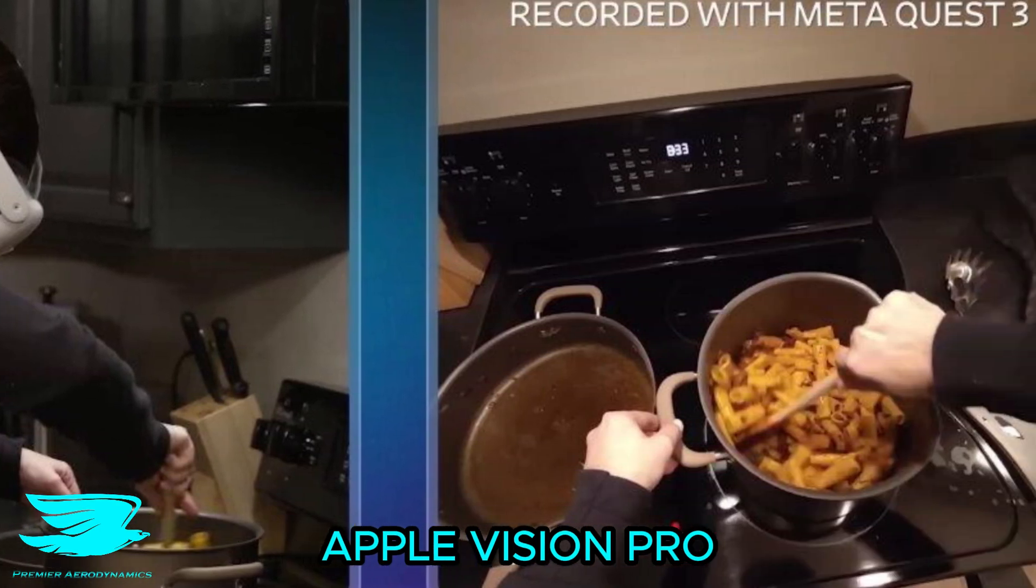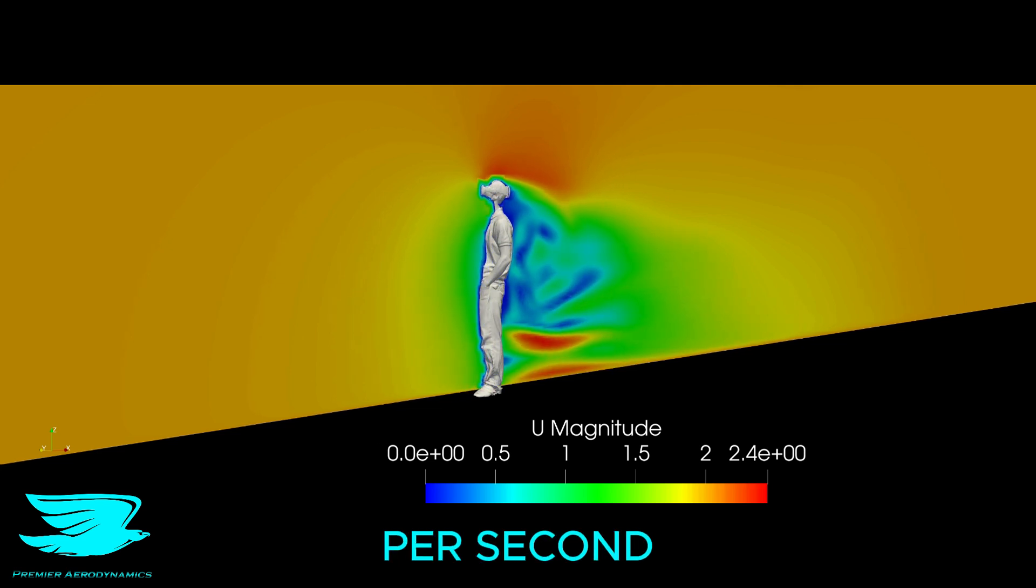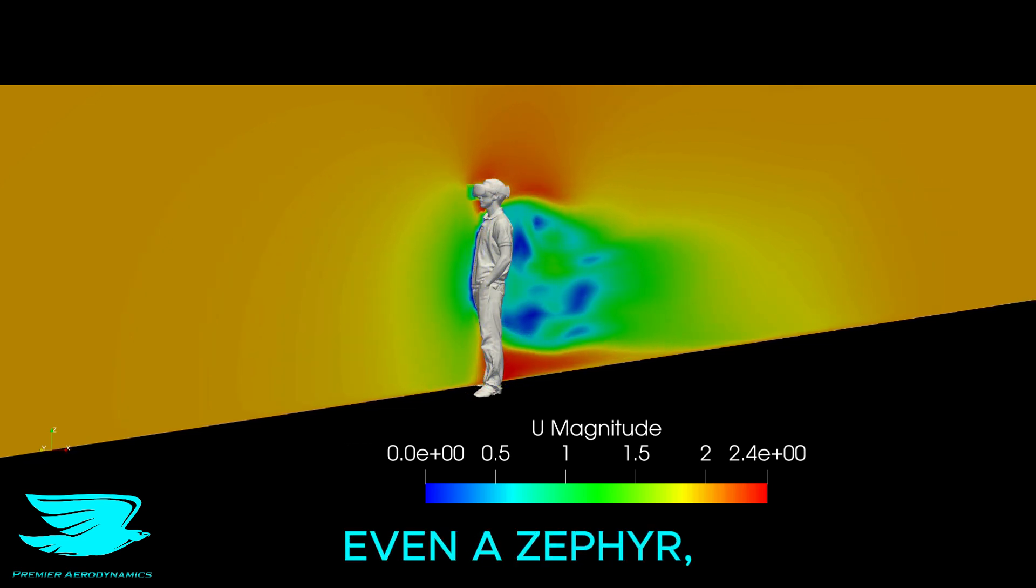Are you aerodynamic while using Apple Vision Pro? To find out, we have Bobby here. The floor is hitting him at 2 meters per second, so a light breeze, or even a zephyr if you will.